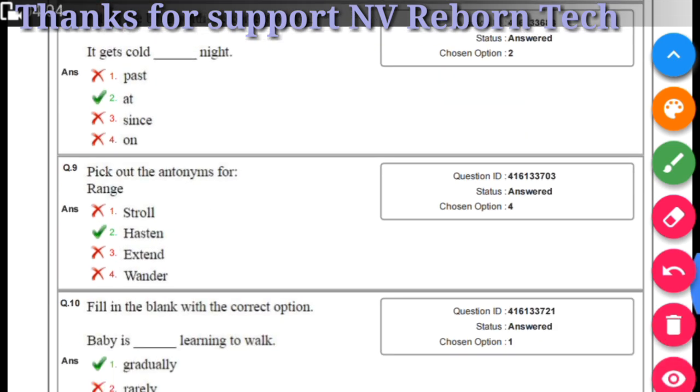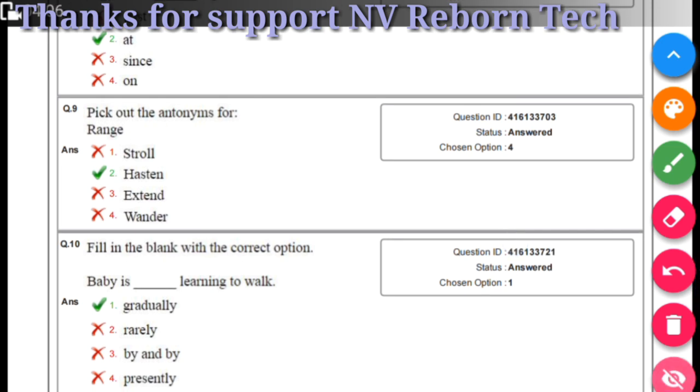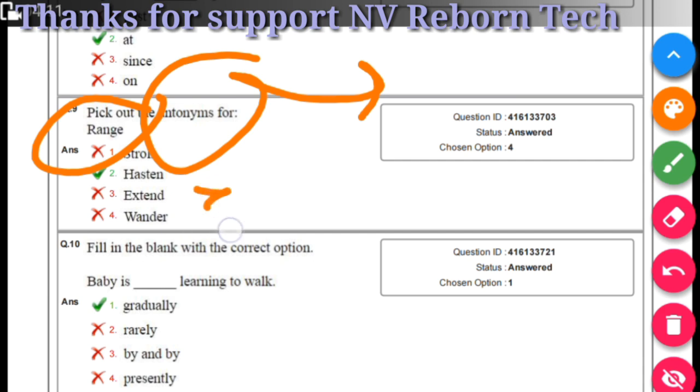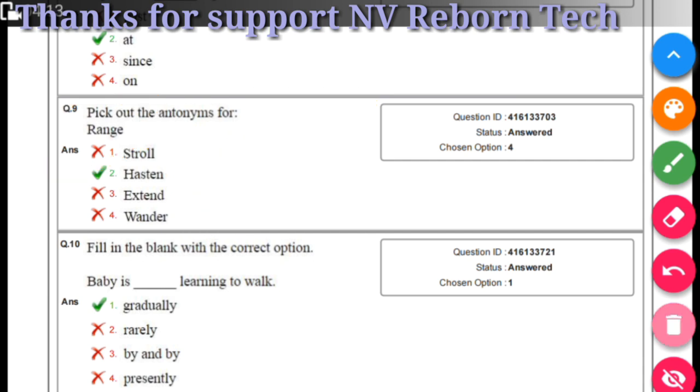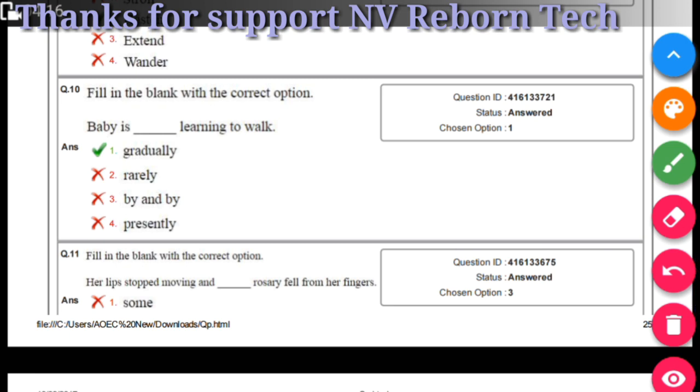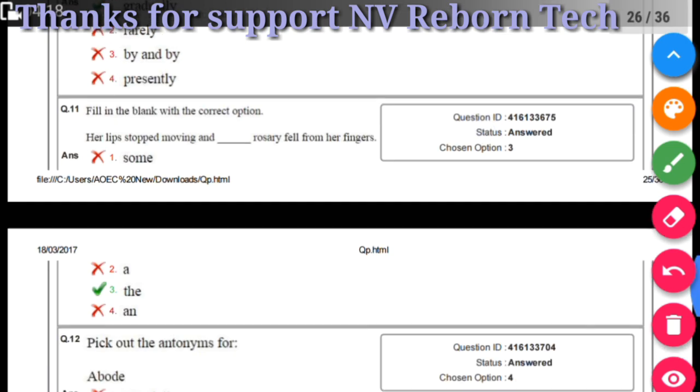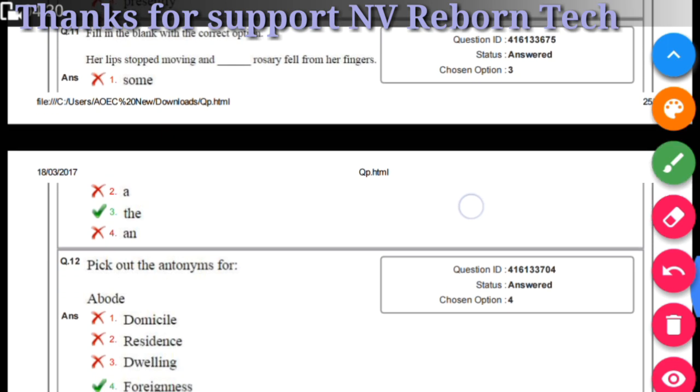Let's check out antonyms. Antonyms means opposite meanings. What is the opposite meaning of 'range'? Range means the opposite is 'hasten,' not 'extent' or 'vendor.' If you have any doubt regarding the questions, please comment and I'll solve your problem as soon as possible.